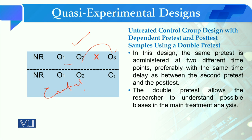Why do we take two pre-tests in this framework? If there are group differences, we can match them out over a period of time. We observe how each group behaves, and if there is a behavioural change, we check whether the control group notices it or not. Then we conduct the intervention, followed by the post-test.